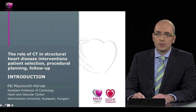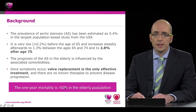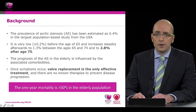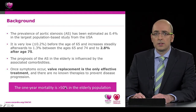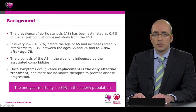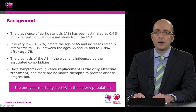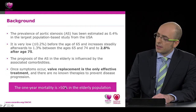The prevalence of aortic stenosis has been estimated at 0.4% in the largest population-based study from the United States. It has very low prevalence before age 65, increasing steadily afterwards: 1.3% between ages 65 and 74, and rising to 2.8% after age 75. The prognosis is influenced by associated comorbidities, and once symptoms occur, valve replacement is the only effective treatment. The one-year mortality is more than 50% in this elderly population.